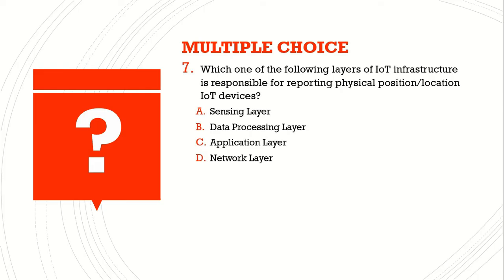Question number seven: which one of the following layers of Internet of Things infrastructure is responsible for reporting the physical position or location of IoT devices? A) sensor layer, B) data processing layer, C) application layer, D) network layer. The answer is A) sensor layer, also known as the sensing layer.